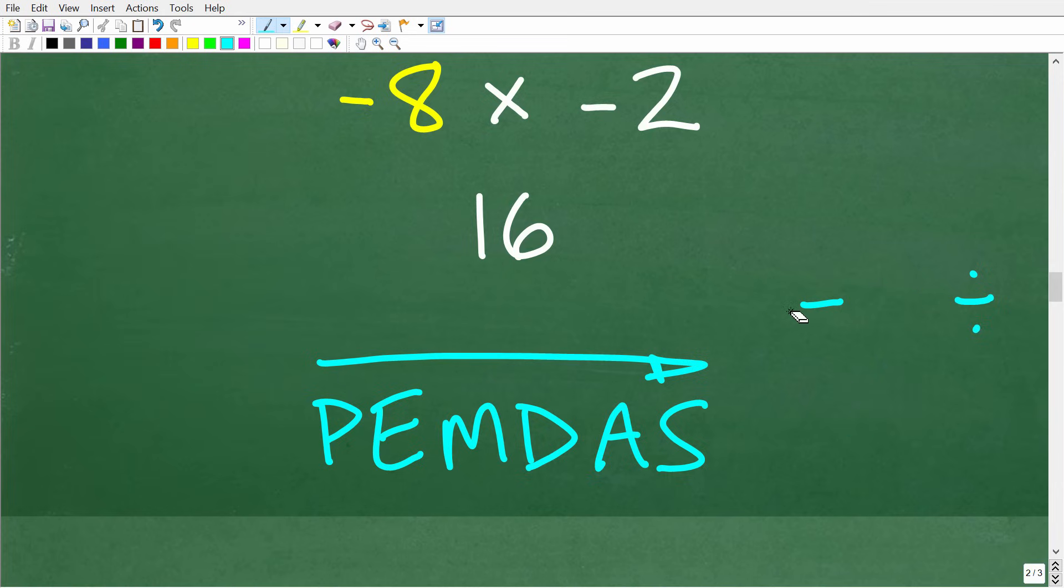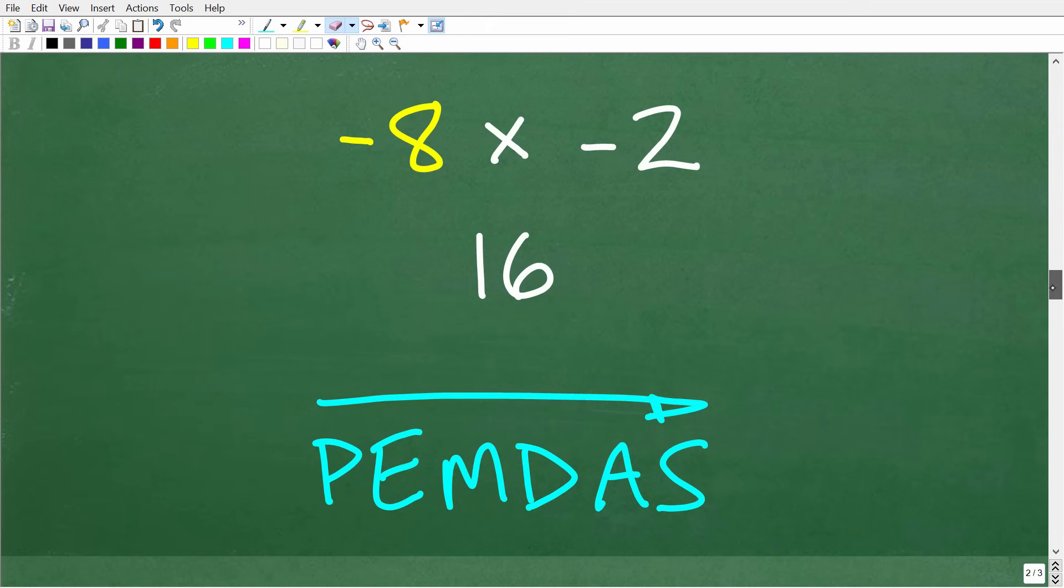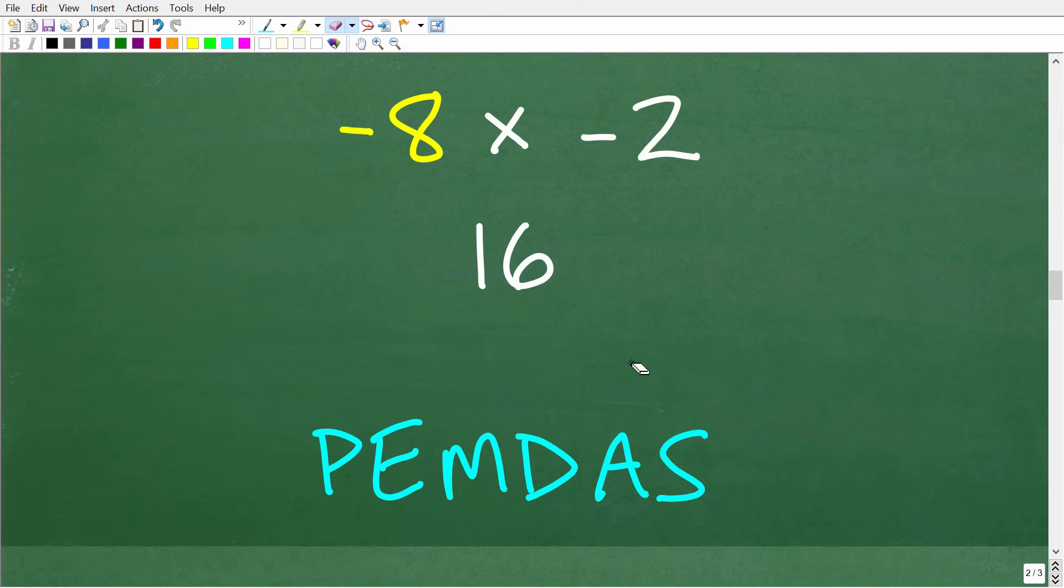So when you have a problem, you need to follow the correct order. So in our problem here, we have powers, we have division, and multiplication. So what do we do first? Well, again, we need to understand PEMDAS. Okay, so here is how this works. Again, this is a checklist that goes from left to right.